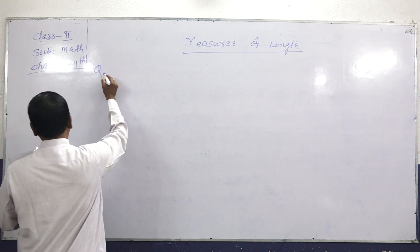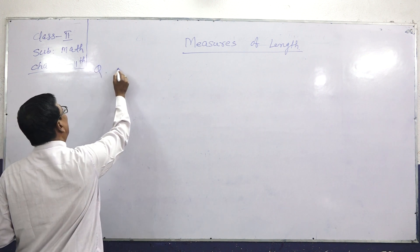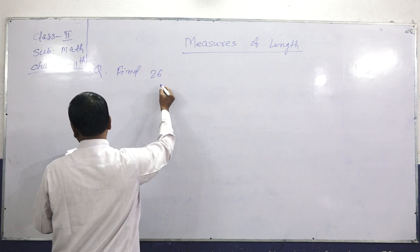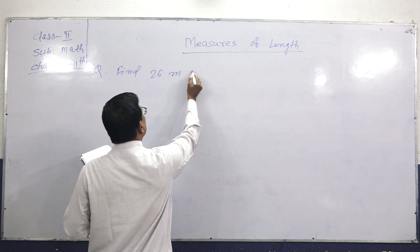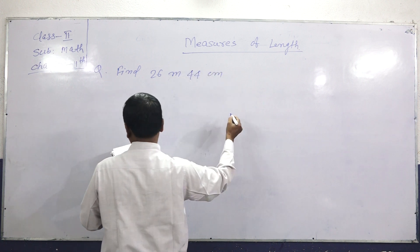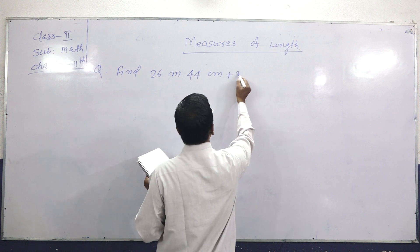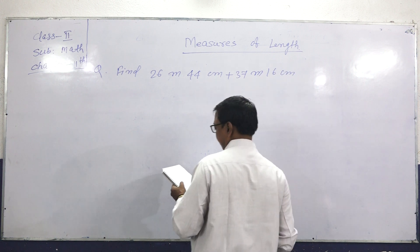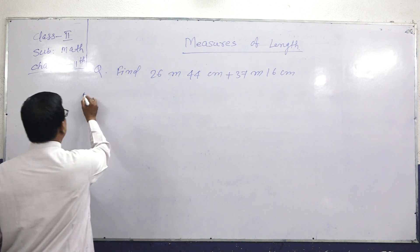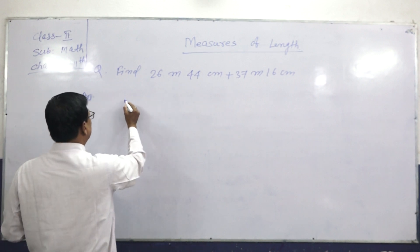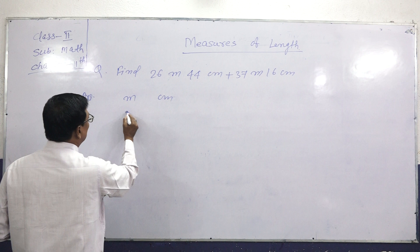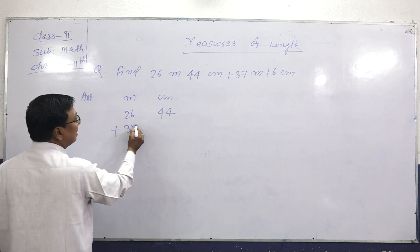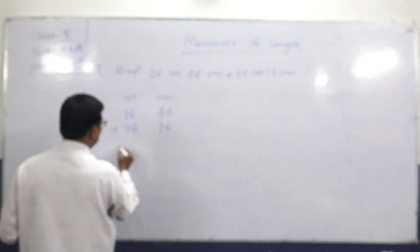Next question. Add 26 meters, 44 centimeters plus 37 meters, 16 centimeters. In meters and centimeters: 26 meters 44 centimeters plus 37 meters 16 centimeters.